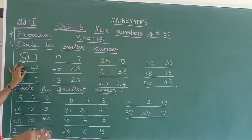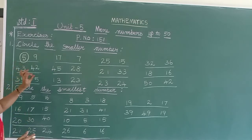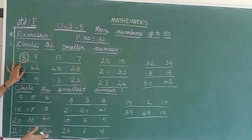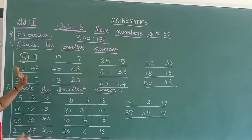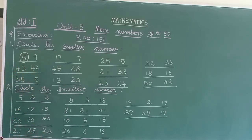In the forward counting it continuously goes on. The number near to 1 is smaller.